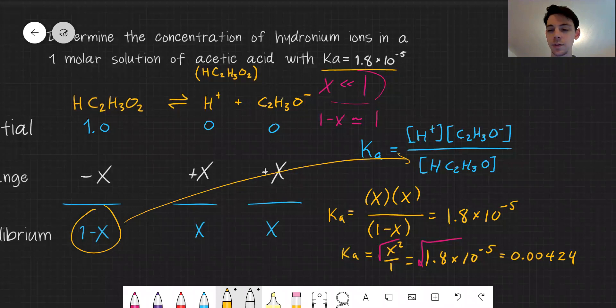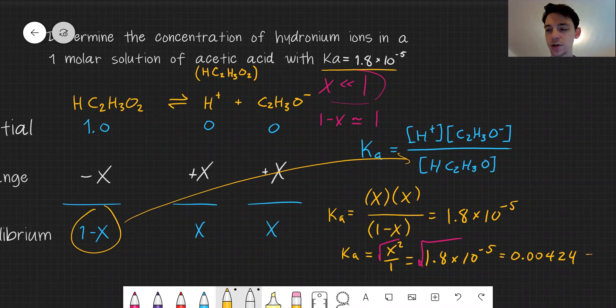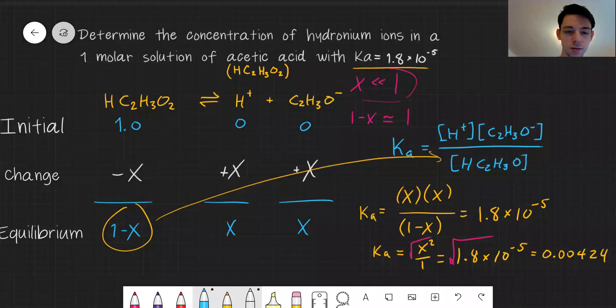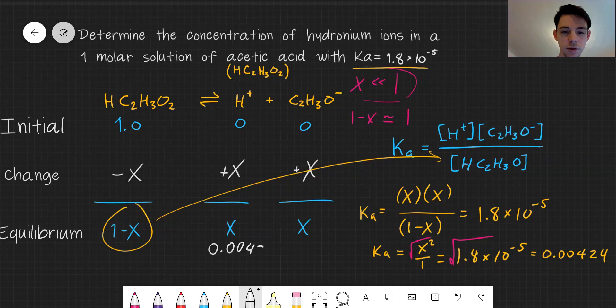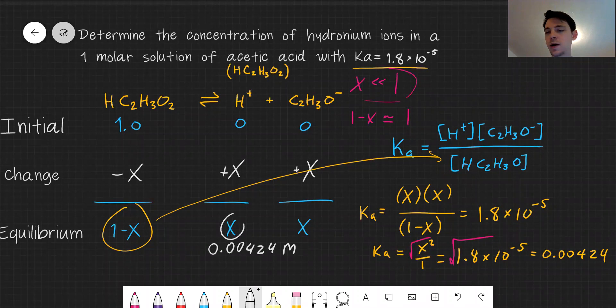So what is that number? So this is X. So what does that number actually mean? Well, it tells me that this X, the hydronium ion concentration is 0.0424 molar.